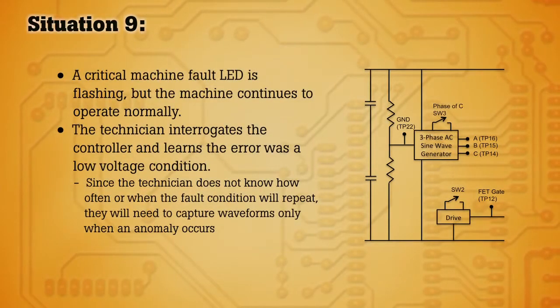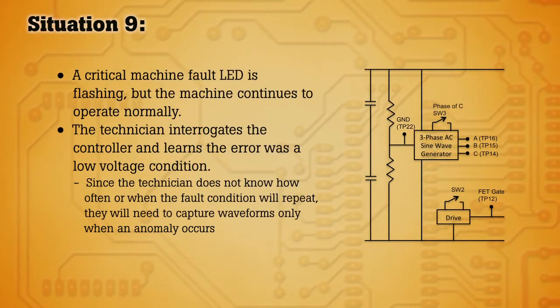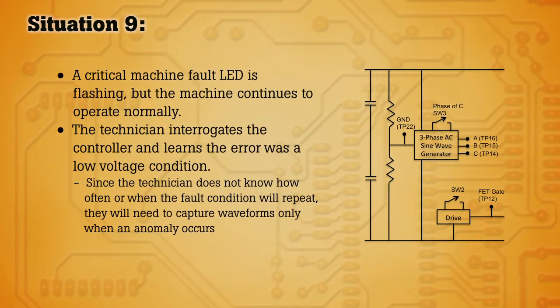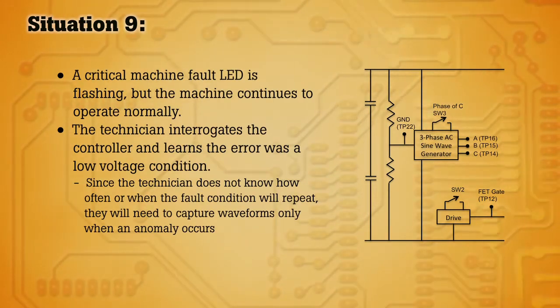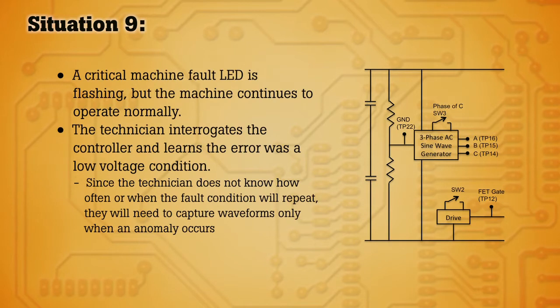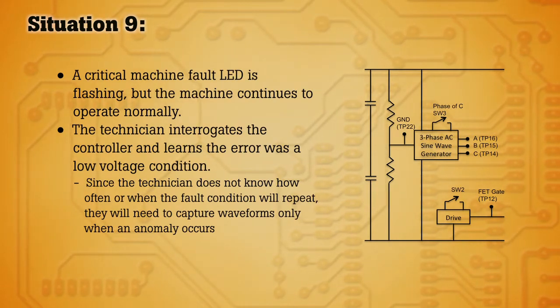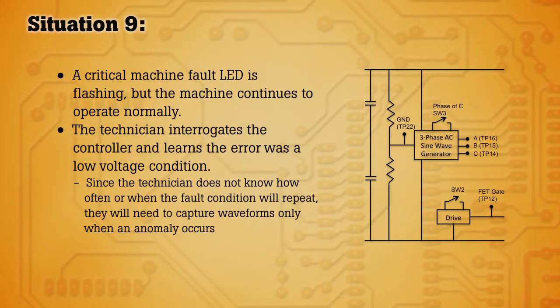Here we have a scenario where you have a critical machine with a fault LED flashing, but the machine is continuing to operate normally. Diagnosing the controller you find the error codes indicate there has been a low voltage condition. Since you don't know when the fault occurred or how often it's happened, it's difficult to diagnose the root of the problem.